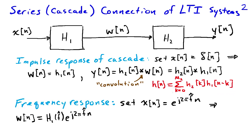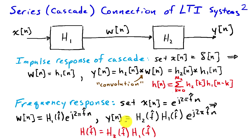Finding the frequency response of the cascade is a little bit simpler. We set x of n equal to e to the j 2 pi f hat n — we apply a complex sinusoid. Because these are linear time invariant systems, the output when the input is a complex sinusoid is just the product of the input times the frequency response of the system. So w of n is h1 of f hat times the input complex sinusoid. The same principle applies for h2, so y of n is h2 of f hat times w of n, which was h1 of f hat times e to the j 2 pi f hat n. Therefore, the frequency response of the cascade connection is just the product of the two individual frequency responses.